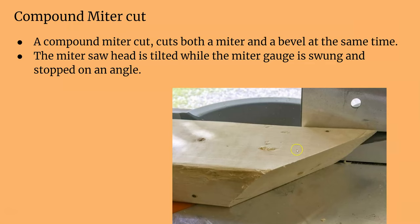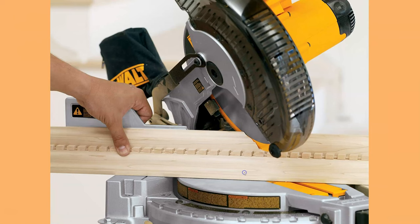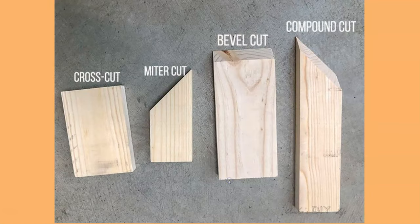Then you have a compound miter, which is both a bevel and a miter cut combined — a miter angle and a bevel angle at the same time. That's why crown molding is said to be so difficult to cut, because you have to do both at once. So you have a compound cut, a bevel cut, a miter cut, and your regular cross cut.